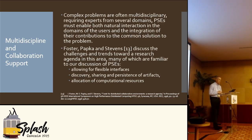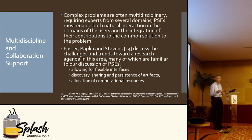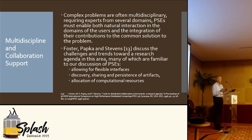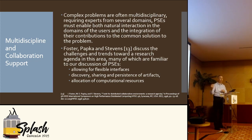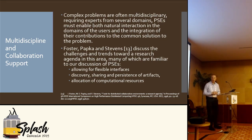Another idea is the need for multidisciplinary and collaboration support. Very often in a complex scientific environment, scientists and engineers from different disciplines need to work together. If you go back to the chemistry example, think about how they might need to work with somebody if the problem is both chemical and biological in nature — they tend to speak somewhat different languages. You'd want the system to provide each with an interface in their own language but allow them to work together. There was work on how to enable flexible interfaces so you get the interface you need for your problem.